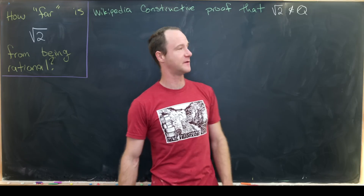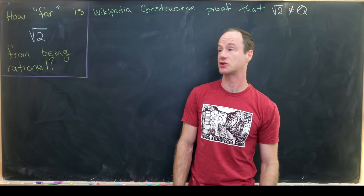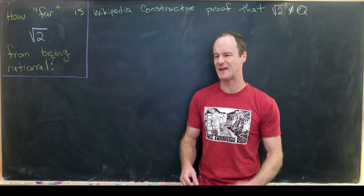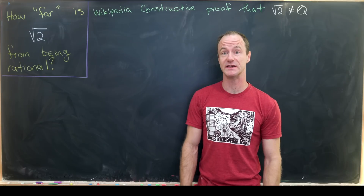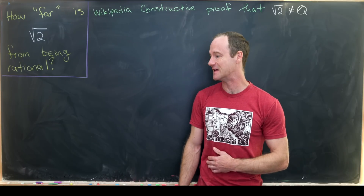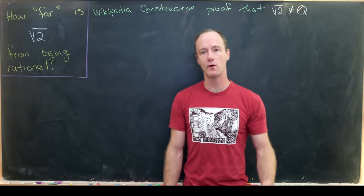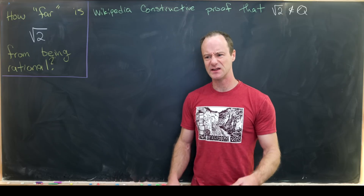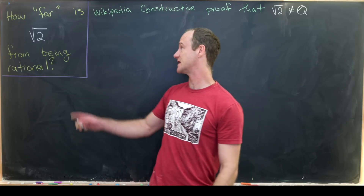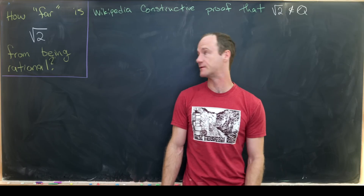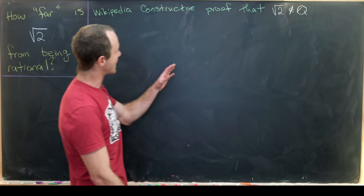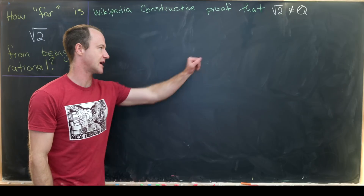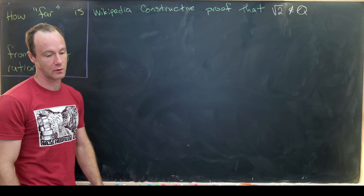The other day I found a constructive proof that the square root of two is irrational on Wikipedia. Generally, math Wikipedia is pretty good and there aren't really that many problems or inconsistencies, but I found an inconsistency in this proof. I'd like to go over this proof, point out where the inconsistency is, and then see what this thing is really proving.